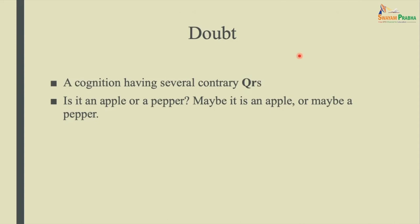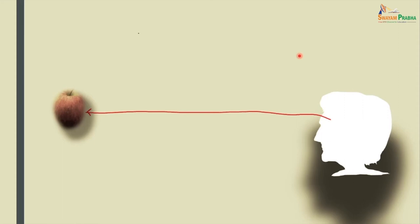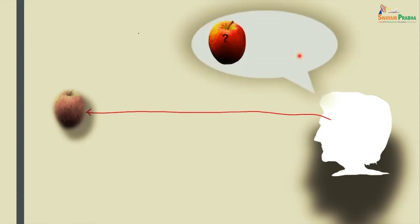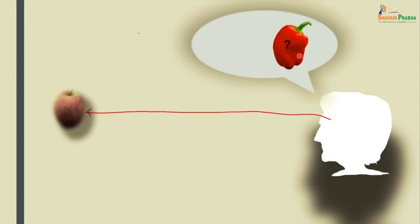Then there is a doubt. What is a doubt? It is a cognition having several contrary qualifiers. Contrariety is a property we will talk about. For example, 'Is it an apple or a paper?' is a doubt. Or you think that maybe it is an apple or maybe a paper — that also is a doubt. You see something, you don't know what it is, and then you wonder: is it an apple or is it a paper?